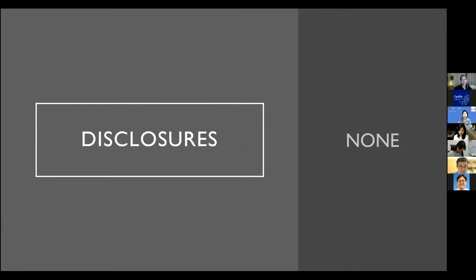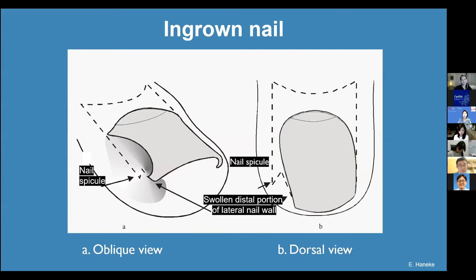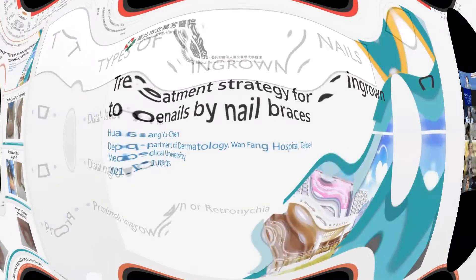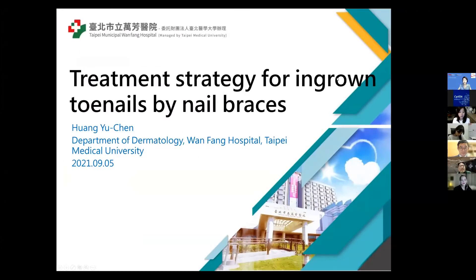As a review, ingrown nail is a condition wherein a nail spicule pierces the lateral folds. It is the most common form, causing a foreign body type reaction which leads to inflammation, pain, granulation tissue formation, and secondary bacterial infection. This cascade of reaction tends to be chronic and cyclical, and the causes are multifactorial.